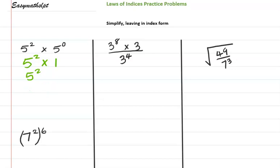This one uses the power-to-power law: 7 to the second power, to the sixth power. This simplifies to 7 to the power of 2 multiplied by 6, which is 7 to the 12th power.